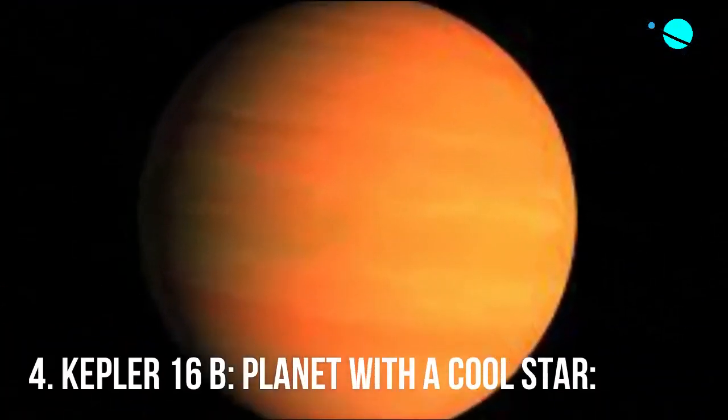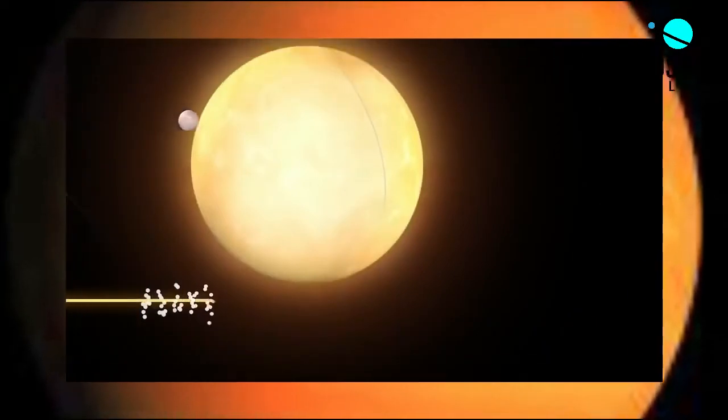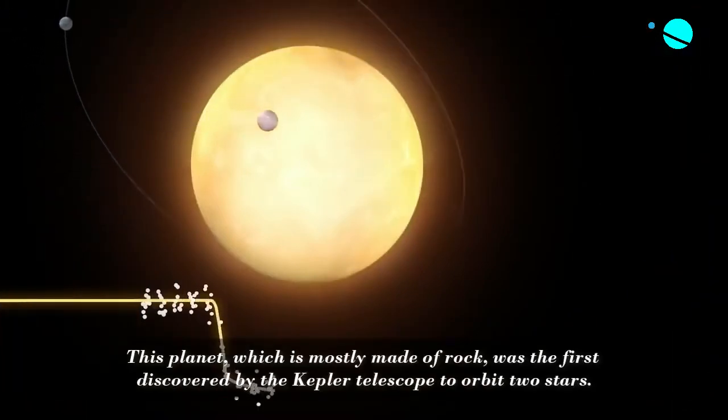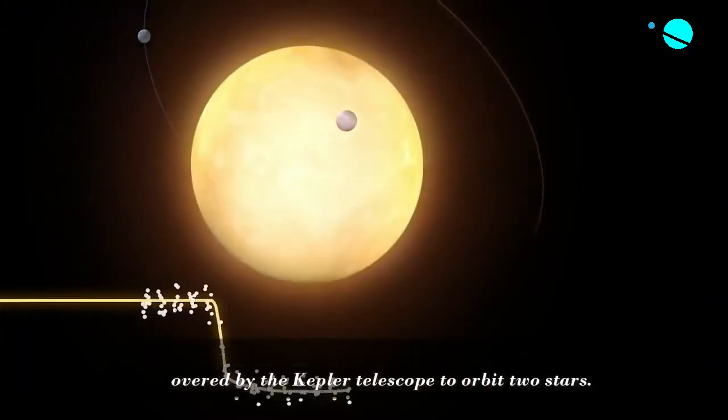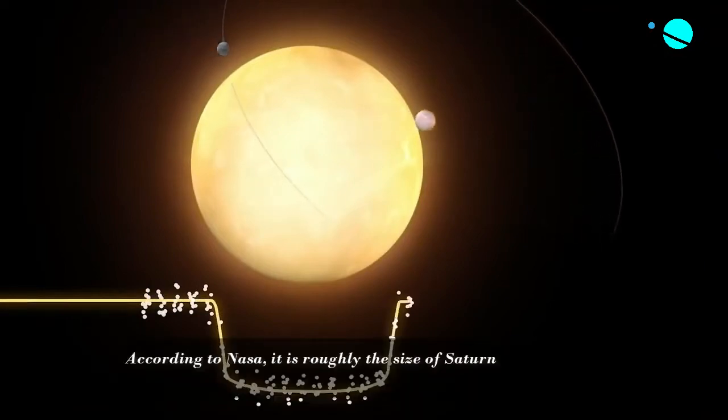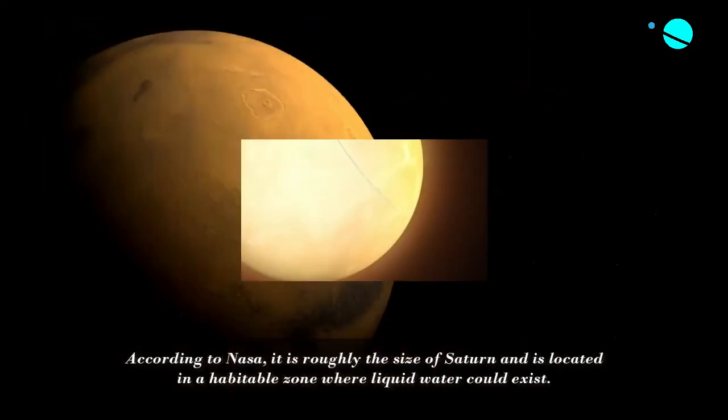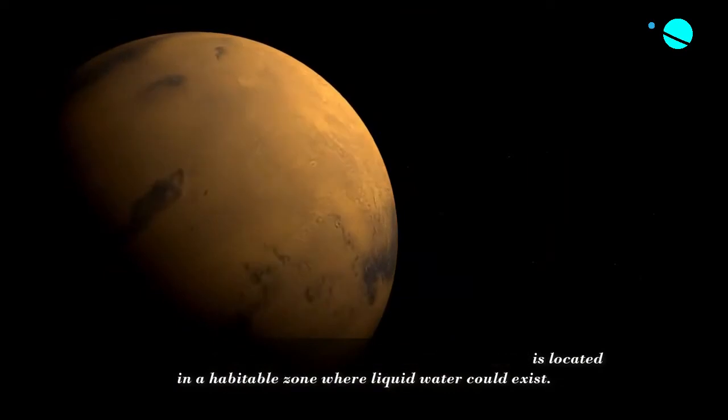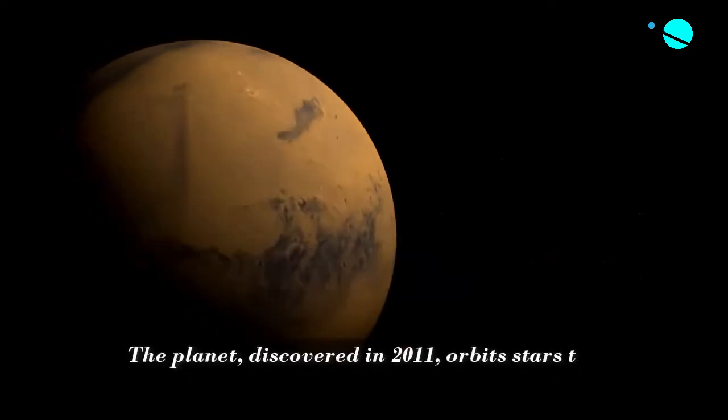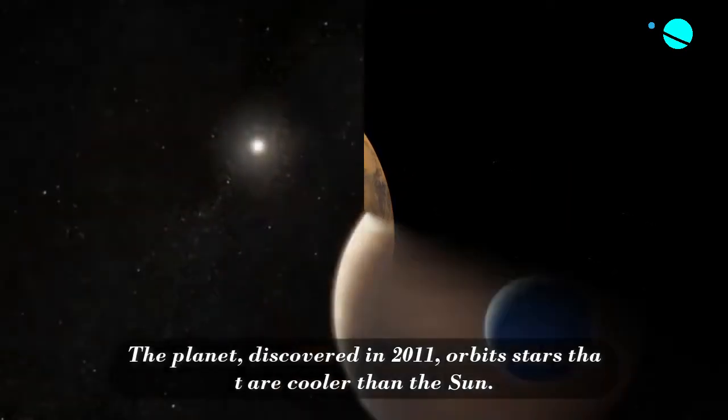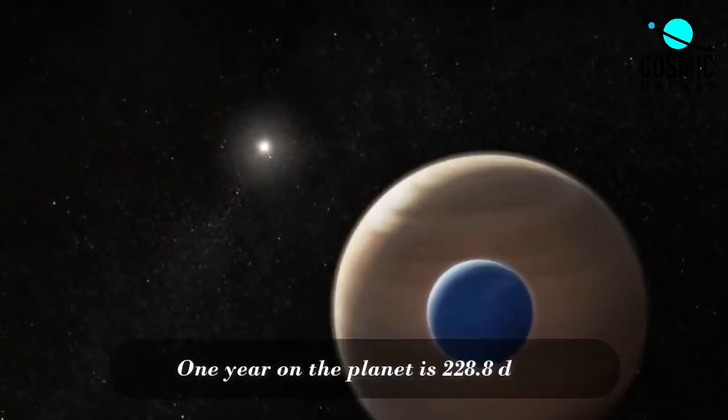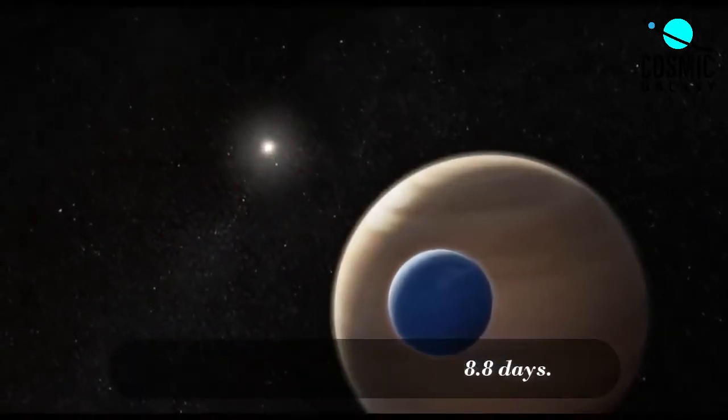Number 4, Kepler-16b, Planet with a Cool Star. This planet, which is mostly made of rock, was the first discovered by the Kepler telescope to orbit two stars. According to NASA, it is roughly the size of Saturn and is located in a habitable zone where liquid water could exist. The planet, discovered in 2011, orbits stars that are cooler than our Sun. One year on the planet is about 228.8 days.